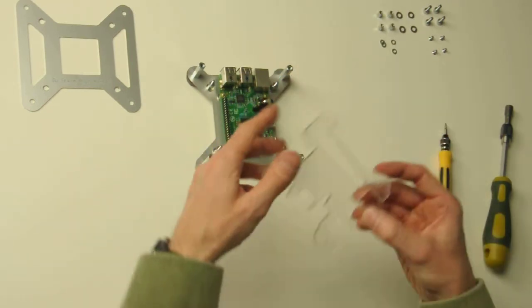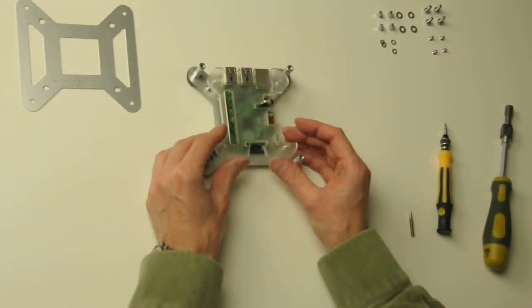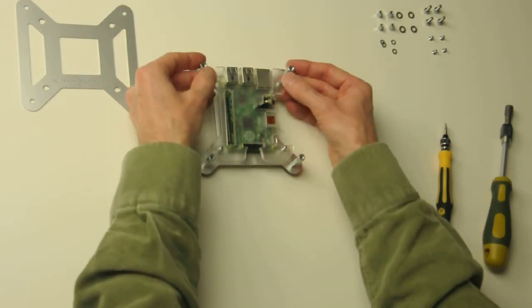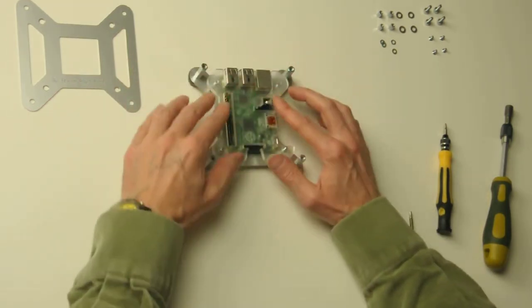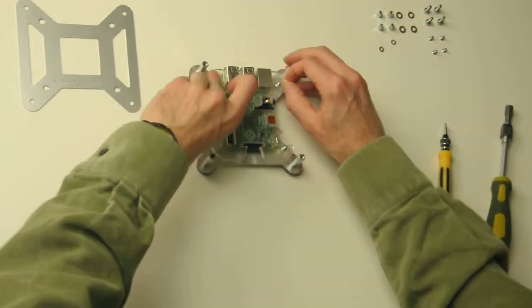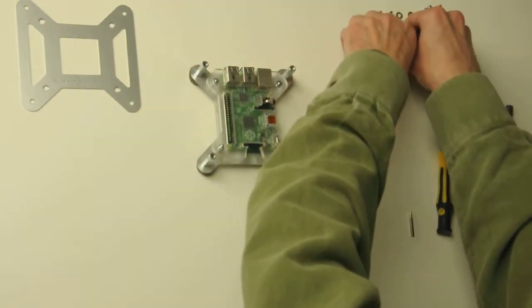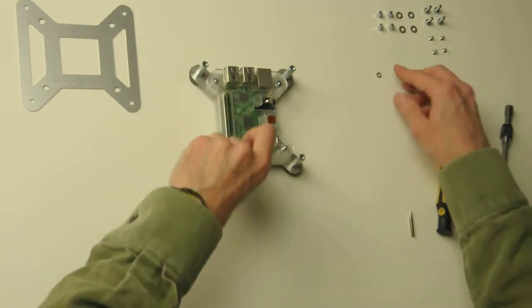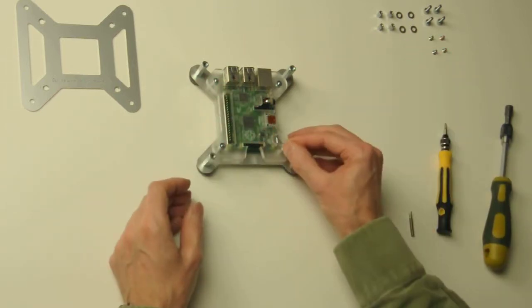Four M3 washers to gain some height. And then the acrylic sheet. Then again, four M3 washers to again win some height. In total that would be around and about 1mm.